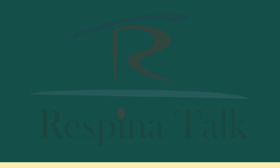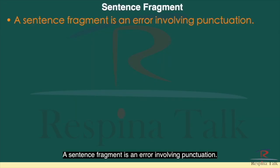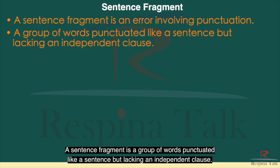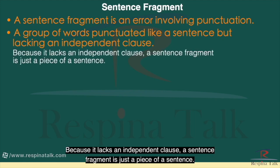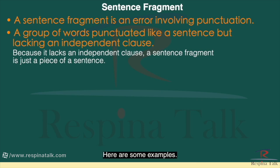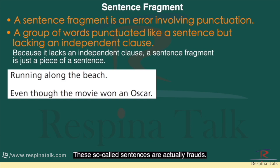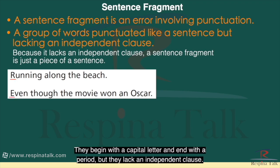Hello everyone and welcome to this writing lesson. A sentence fragment is an error involving punctuation. A sentence fragment is a group of words punctuated like a sentence but lacking an independent clause. Because it lacks an independent clause, a sentence fragment is just a piece of a sentence. Here are some examples: 'Running along the beach.' 'Even though the movie won an Oscar.' These so-called sentences are actually frauds — they begin with a capital letter and end with a period, but they lack an independent clause.